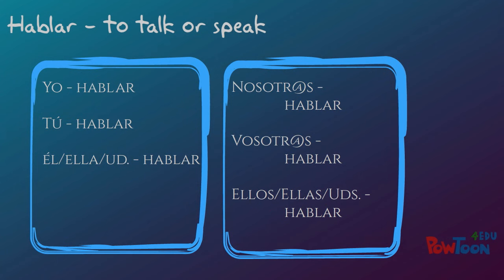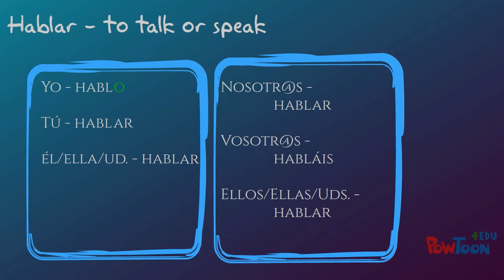So for the pronoun yo, we would drop the AR and add an O. For the pronoun tú, we would drop the AR and add an AS. For the pronouns él, ella, and usted, we drop the AR and then add an A.